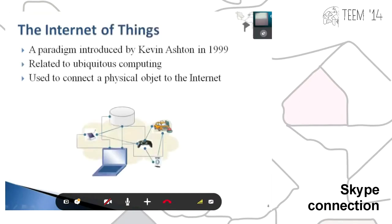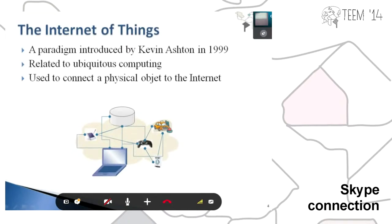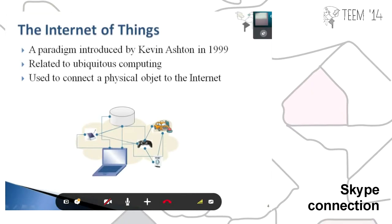The Internet of Things is a paradigm introduced by Kevin Ashton in 1999. It is currently more and more used in many applications. It is related to this process completely and it is used to connect physical objects to the Internet.